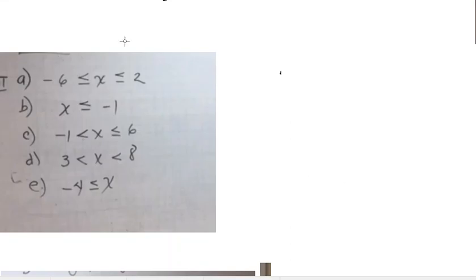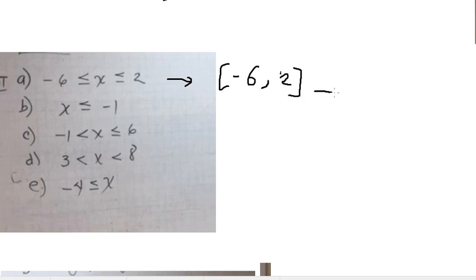Now for the next problem: we have square brackets with negative six and positive two. The graph should look like this.